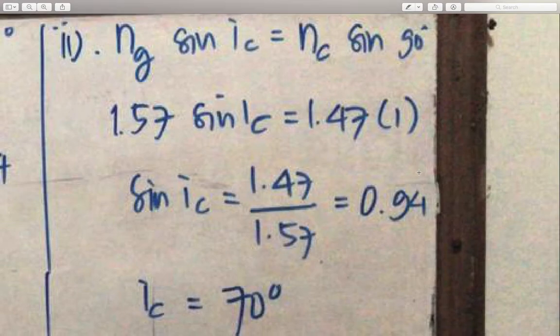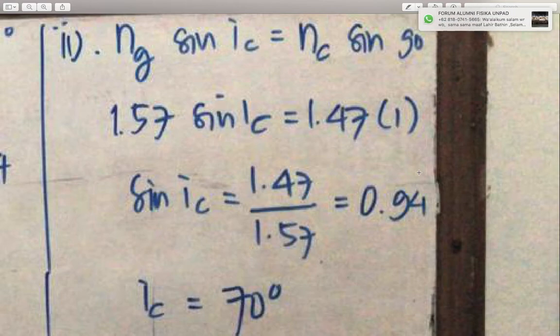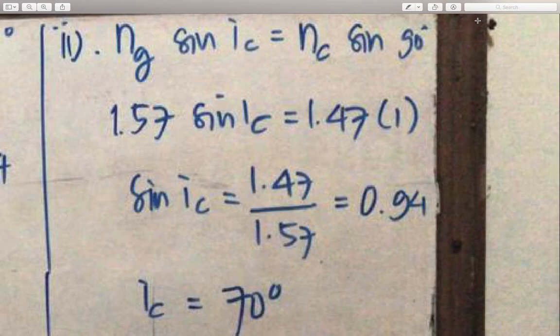N glass sin Ic equals N cladding sin 90 degrees. 1.57 sin Ic equals 1.47 times 1. Sin Ic equals 1.47 divided by 1.57, equals 0.94. Ic equals 70 degrees.